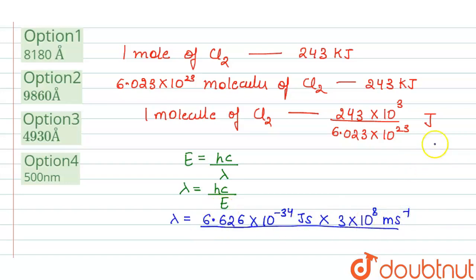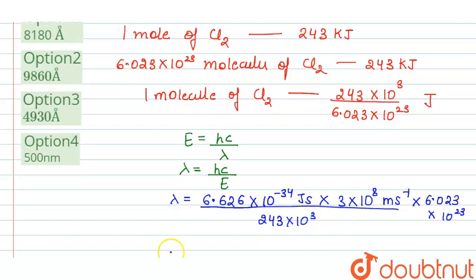divided by E which is this energy, it is 243 times 10 raised to the power 3 divided by 6.023 times 10 raised to the power 23. So from here if we solve lambda,